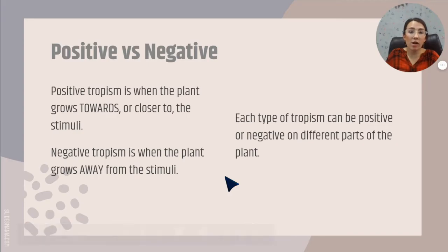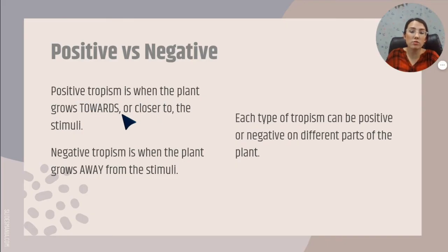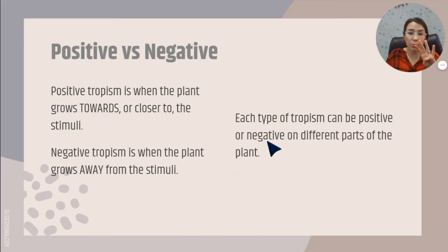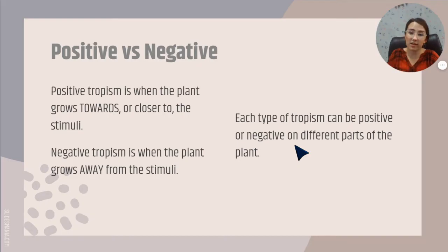Now, we have positive and negative types of tropism. Remember, positive tropism is when the plant grows towards or closer to the stimuli. Negative tropism is when the plant grows away from the stimuli. All four types of tropism can be positive or negative depending upon the part of the plant we're talking about.